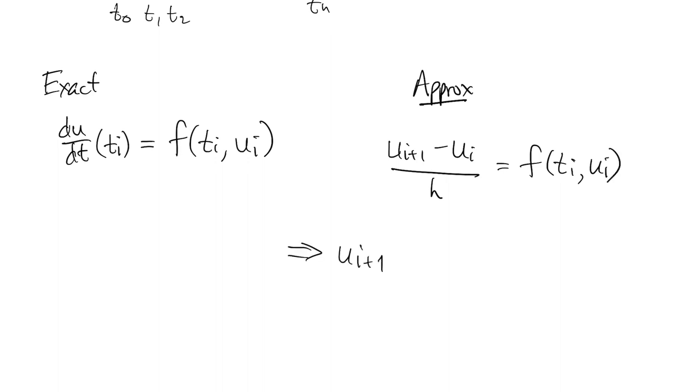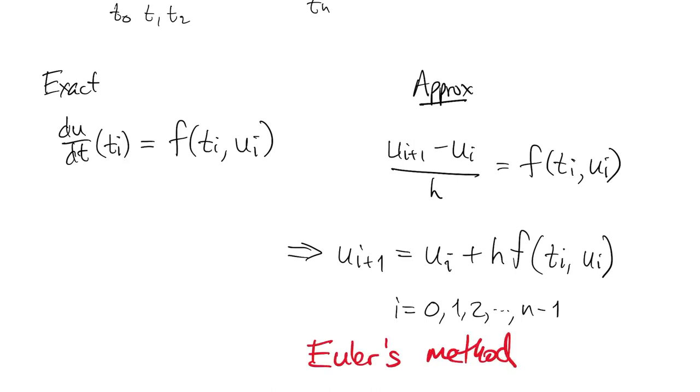We can rearrange this equation to give an explicit formula for ui plus 1 in terms of the value ui. We start out knowing u0, which we use to get u1, which we then use to get u2, and on and on. This formula defines Euler's method.